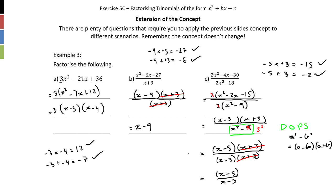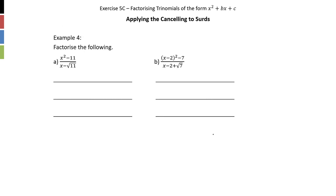So we've applied a whole bunch of different techniques: taking out a common factor, factorising a monic trinomial by inspection, and factorising a difference of perfect squares using our shortcut. We can use these methods with surds as well.